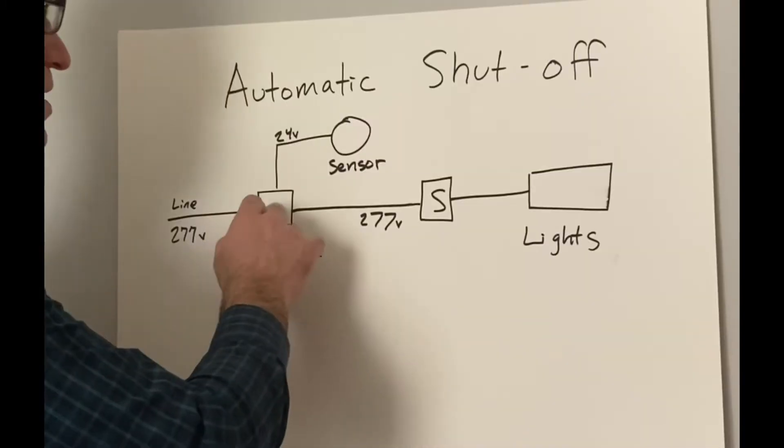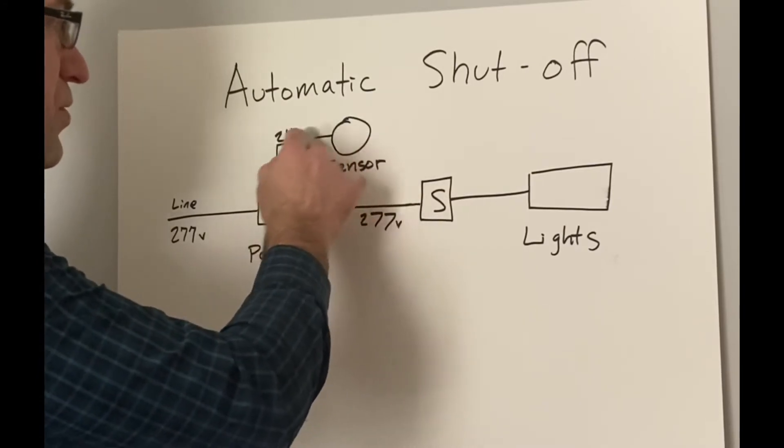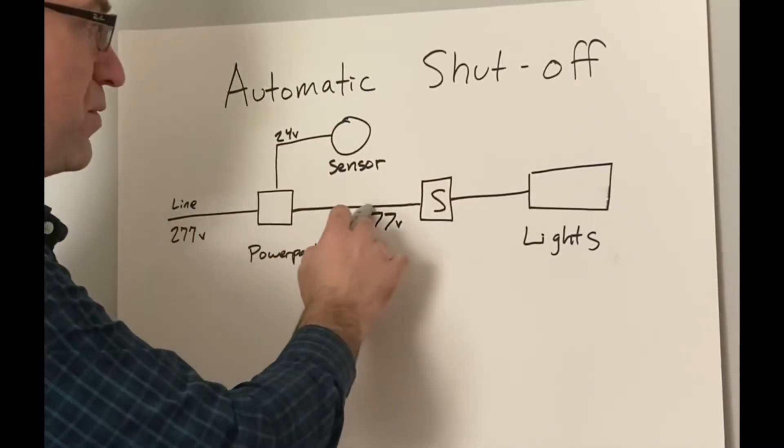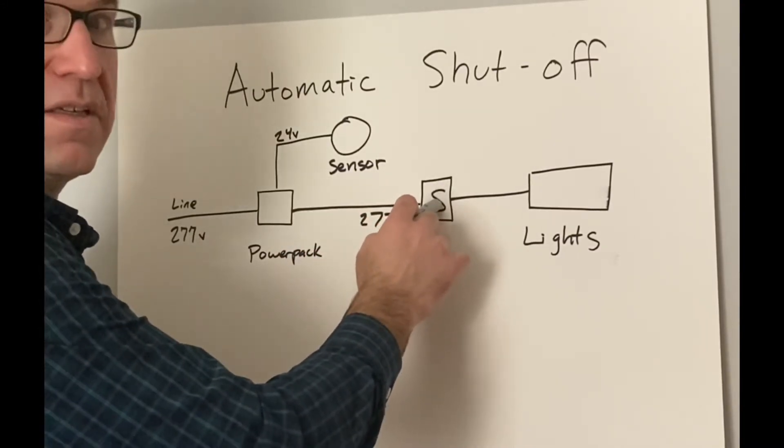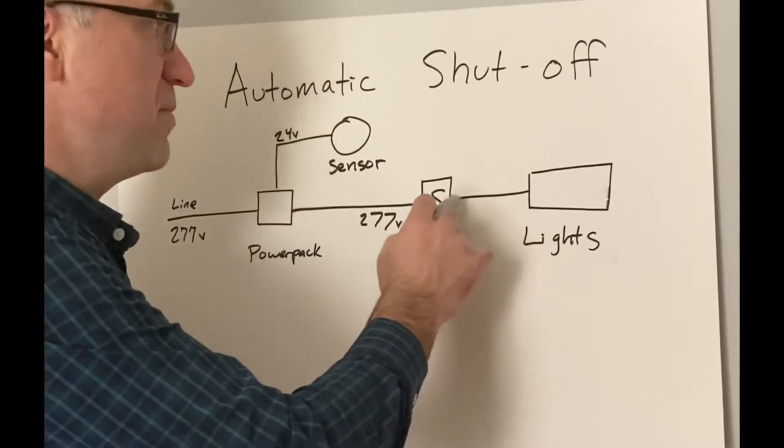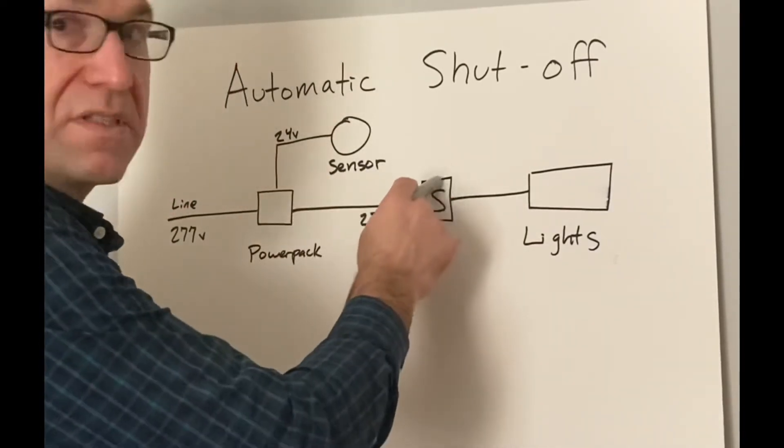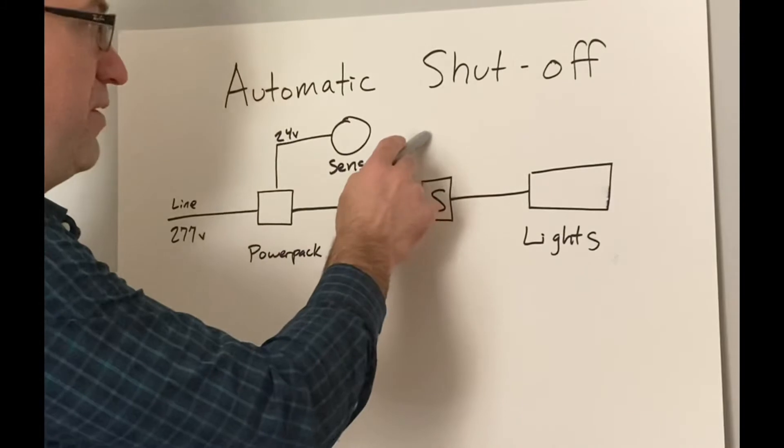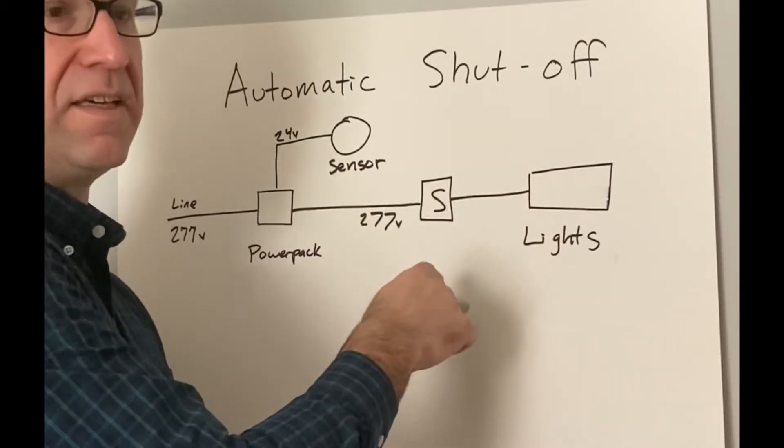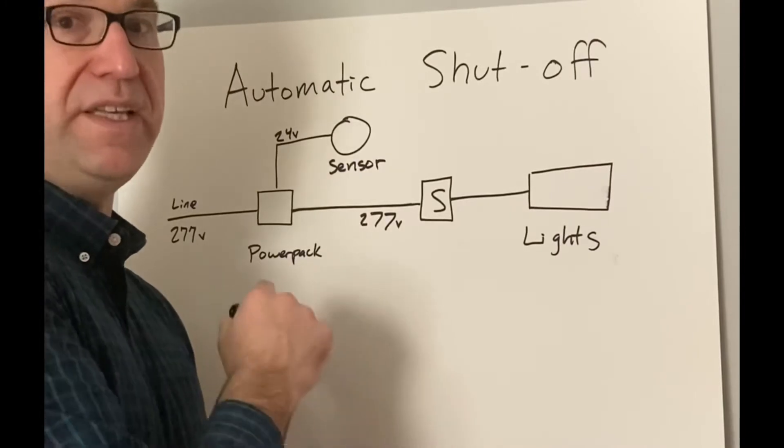So we have our line voltage in and a power pack and our motion sensor. So when we sense motion, it energizes through to here and then our switch turns the lights on and off after that. It doesn't comply with vacancy because if that switch is in on position and this room senses motion, it would turn the lights on. Again, vacancy, have to use the switch to turn the lights on in every case.